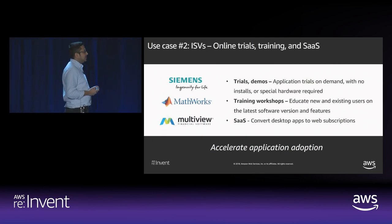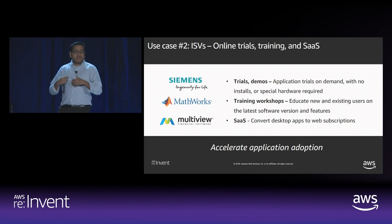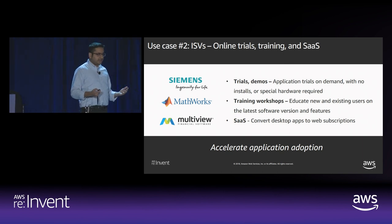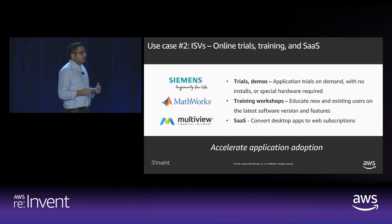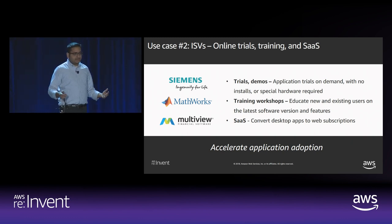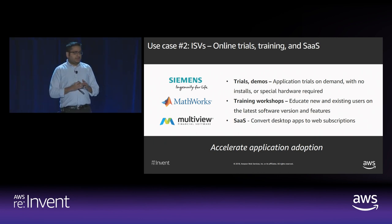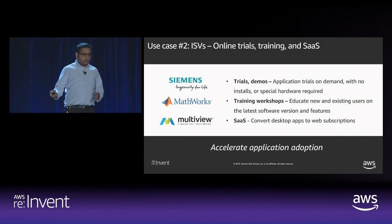The second use case is software vendors building software for customers. They want to accelerate application adoption — starting from trials, enabling potential customers to instantly trial their software on their websites with a single click, without going through downloads of gigabytes of software, complex installation, or worrying about the necessary hardware. All these create friction and long delays from trialing to purchasing. Software vendors want to eliminate this friction and shorten the time from trial to purchase cycle.